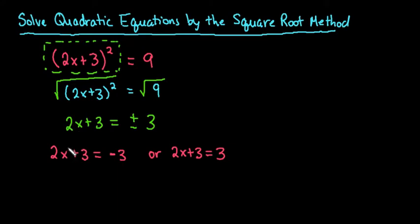For this one, if we subtract three from both sides, make sure that you pay attention to your signs, this would cancel out and we end up with 2x equals negative six. Then to get x completely by itself, we would just divide both sides by two, and we end up with x equals negative three. So that would be our first solution.